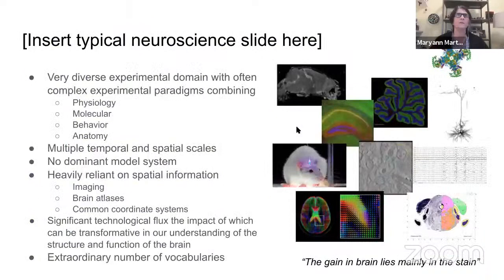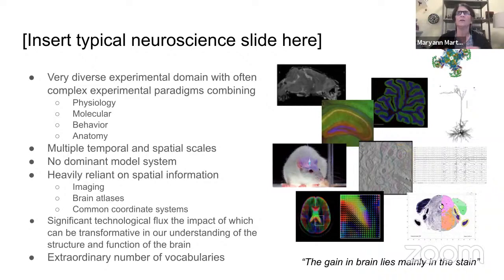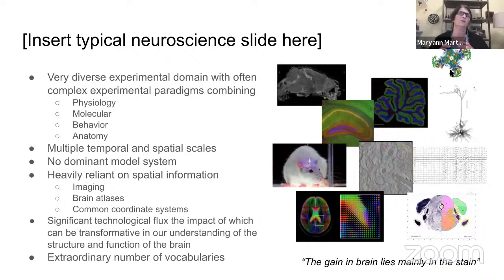I always start any lecture on neuroscience and the data and informatics challenges of neuroscience with some version of this slide. It basically shows you all the different scales over which neuroscience needs to be understood — from the level of the behaving animal down to the subcellular and molecular level. It talks about the different modalities of data we need to acquire, from light and electron microscopy to physiology traces to behavioral data. Neuroscience data is complex and presents unique challenges for data-sharing platforms and FAIR data approaches.